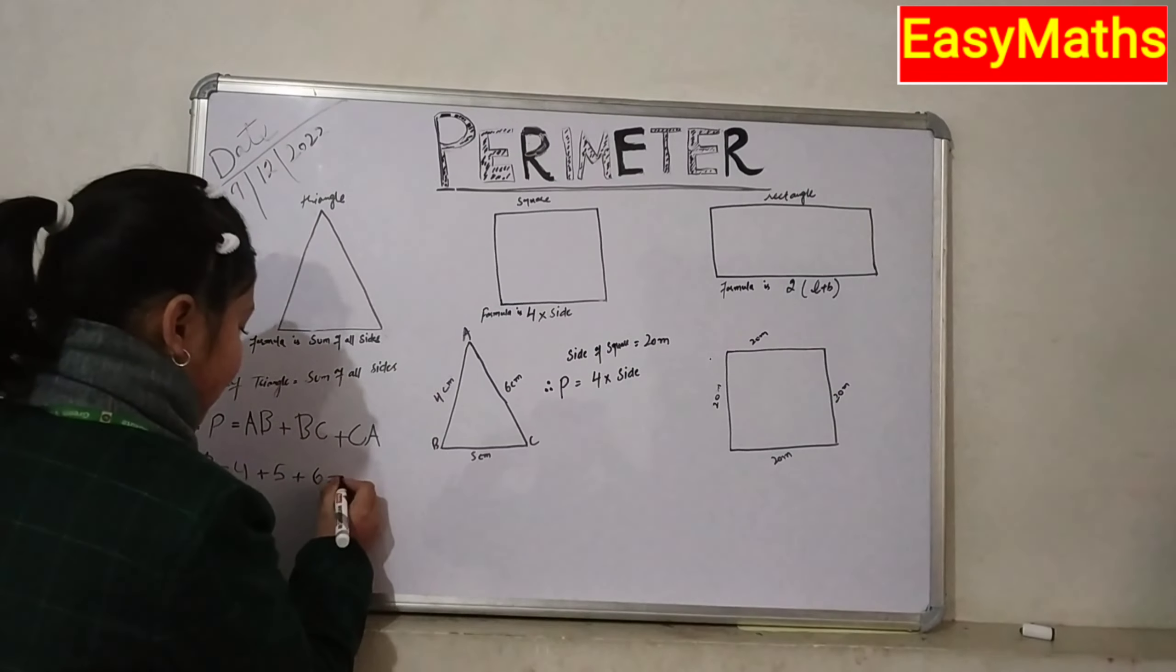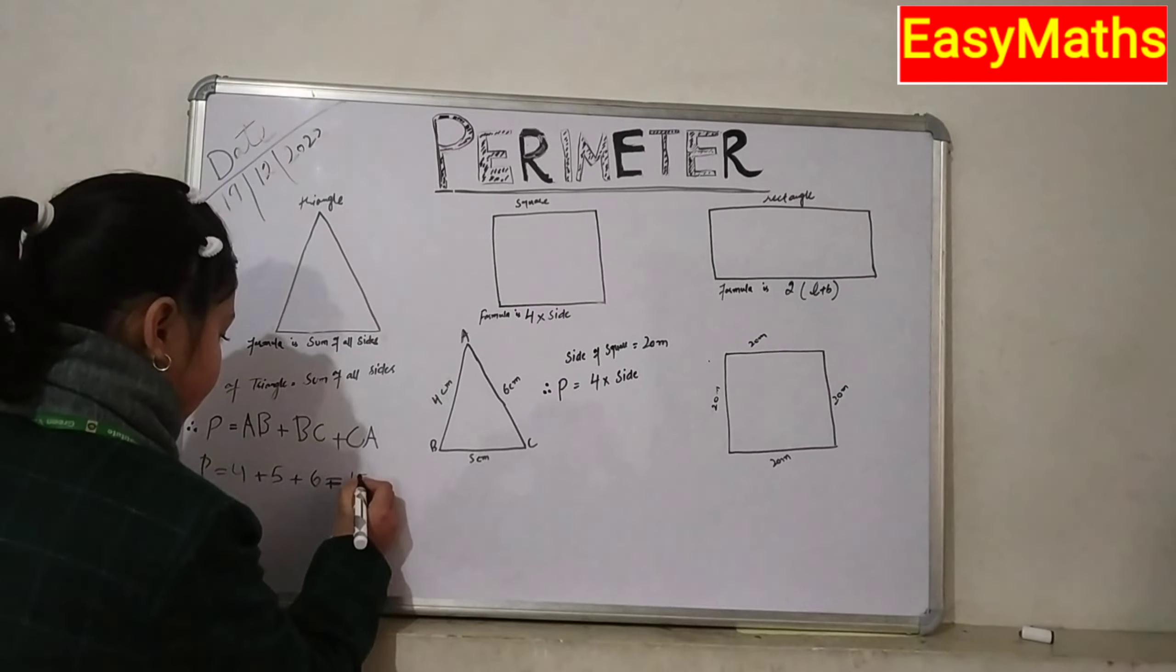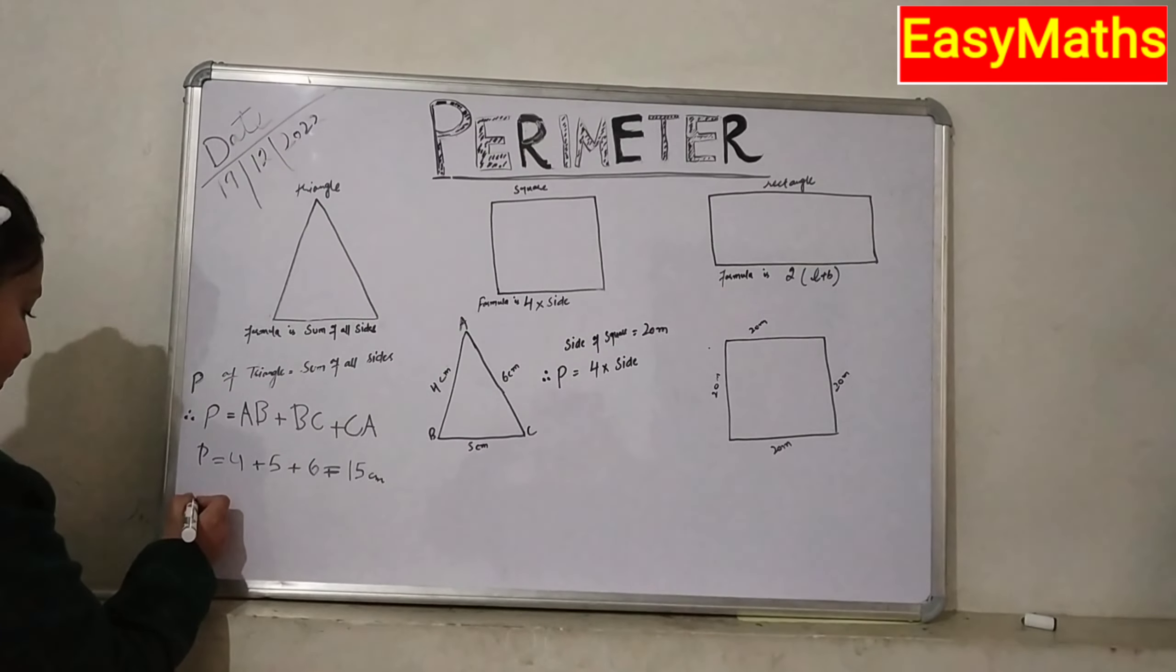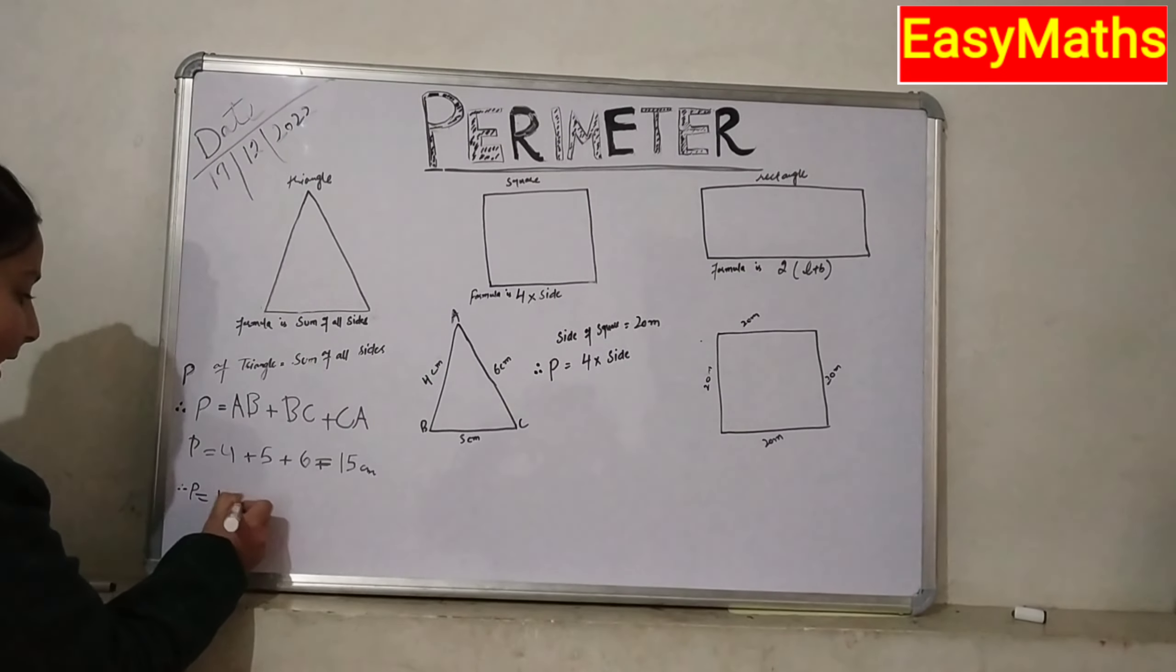Now we will add them, 15 cm. Therefore, perimeter is equal to 15 cm.